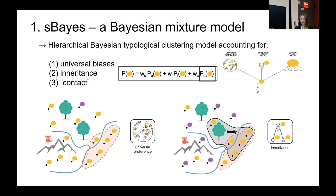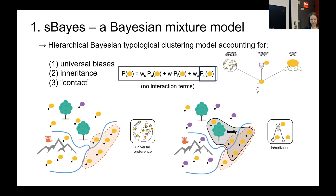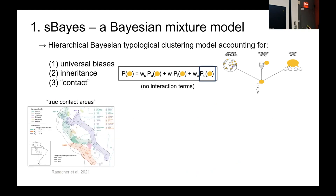There are two important things to mention. One limitation is that there are no interaction terms included in the definition of the model. So if a correlation of features is different in an area or in a family, this is a signal that S-BASE cannot detect — something we have to bear in mind. The second point is that while the model was designed in the hope that whatever comes out as a cluster would be a contact area, we actually cannot be sure that this is always the case. Clusters generated by S-BASE — in this plot, these would be the orange, green, and purple areas.